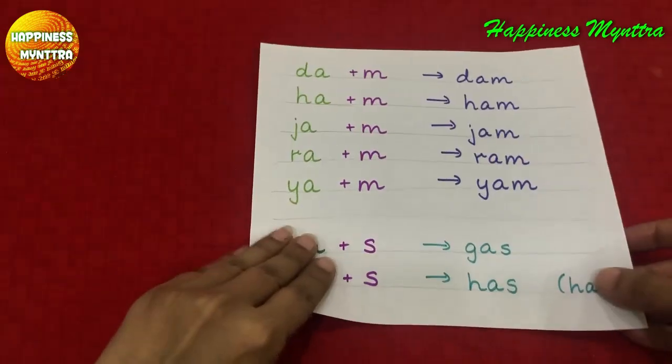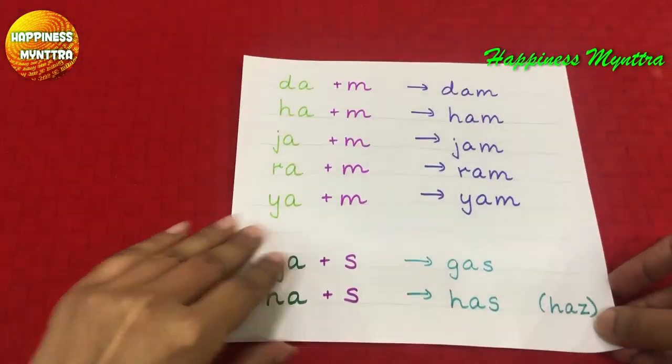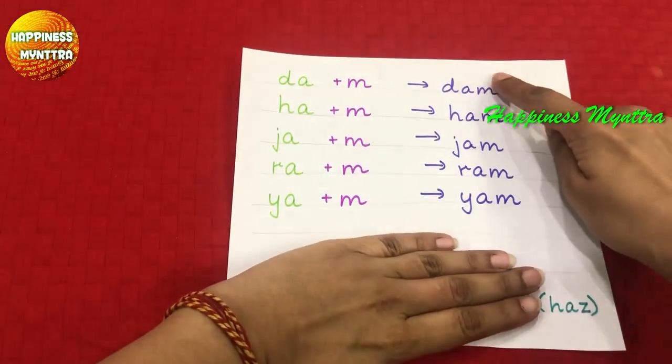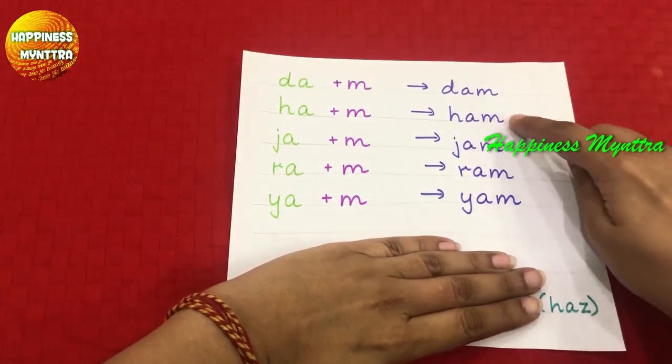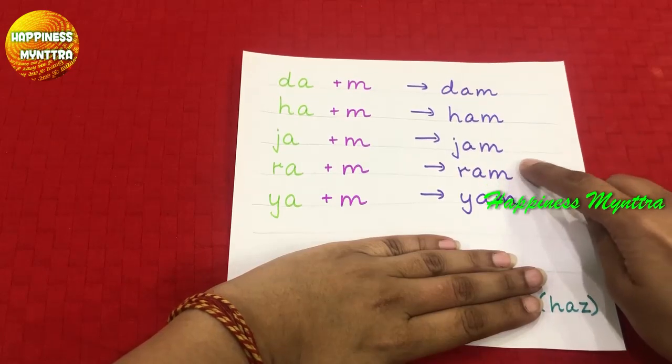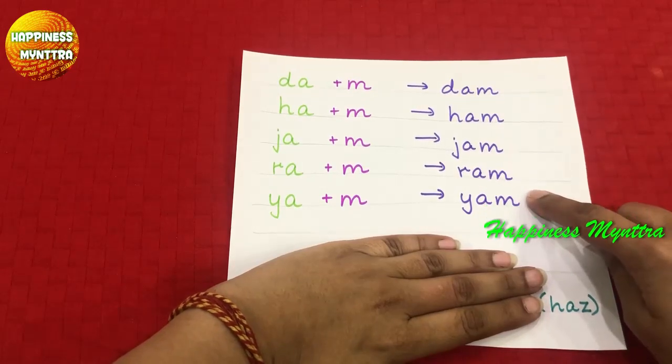After this, we have the AM family. So we have: dam, ham, jam, ram, and yam.